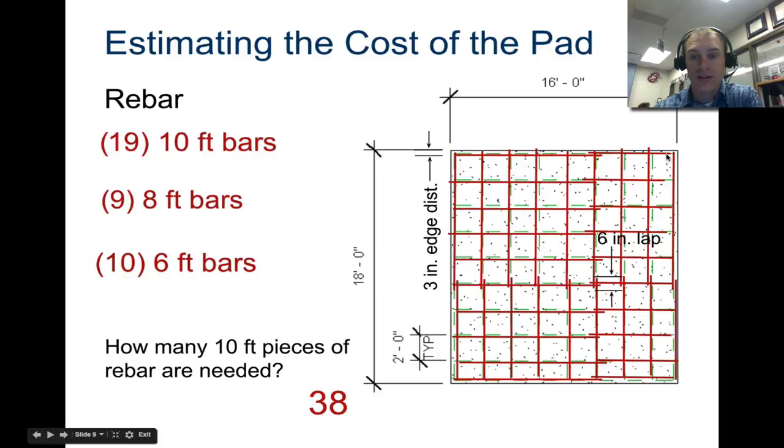Now to overlap these, if we have a 16 foot wide, 10 feet and 6 feet give you 16 feet. If you have three inches open on each edge and then a six inch overlap, we need 1, 2, 3, 4, 5, 6, 7, 8, 9, 10 six foot bars. So that's where we get this. And our eight foot bars are these remaining sections. These ones here: 1, 2, 3, 4, 5, 6, 7, 8, 9. So 9 eight foot bars. So in total we have 19, 9, and 10. If it's sold in 10 foot lengths, then you need 38 total 10 foot pieces of rebar. And you're going to have a lot of scrap. That's just the way that it goes. There are always ways that you can apply different uses for these scraps as well.